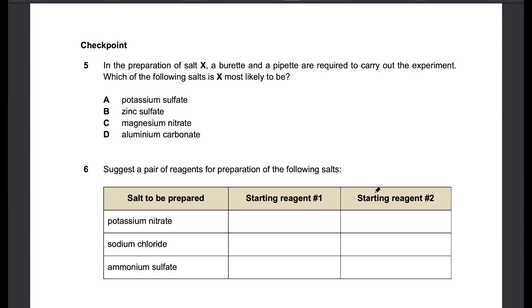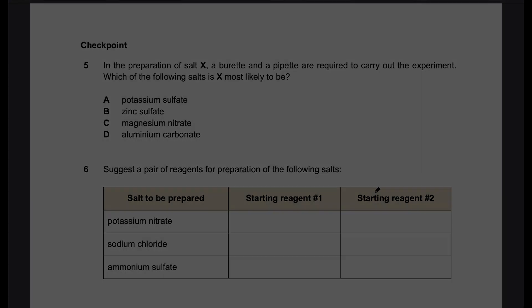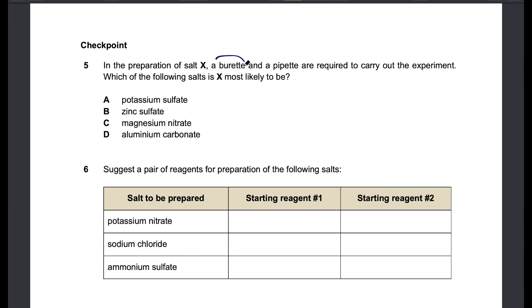Over to the checkpoint. Pause the video and give this a try before I go through the answers with you. Remember in titration we need the two apparatus called burette and pipette. This is used for group one or ammonium salts. So potassium sulfate will be the answer.